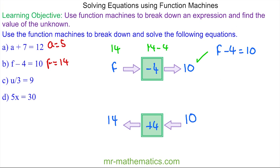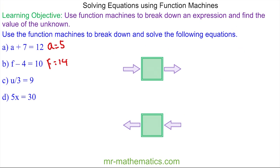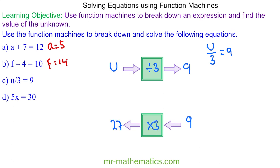Do you want to try and work out the value of u in question c and the value of x in question d? You can pause the video and resume it when you're ready. For question c, we have u ÷ 3 = 9. Remember, when we write equations we don't include a division symbol — we write it as a fraction instead. So u is going into our machine, the function is division by 3, and then 9 comes out. Going the other way, we have 9 going in and we do the opposite of divide by 3, which is multiply by 3.